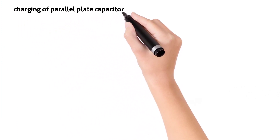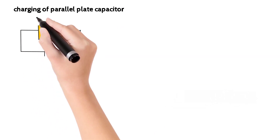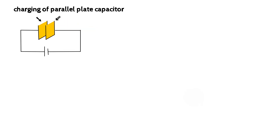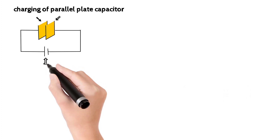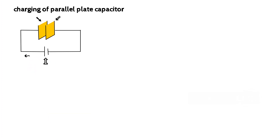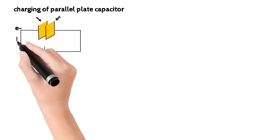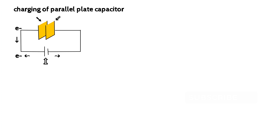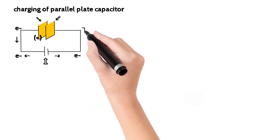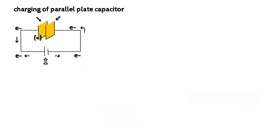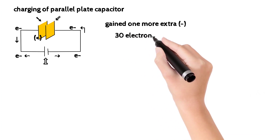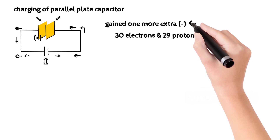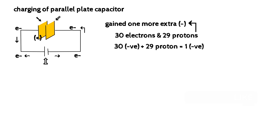Now, a parallel plate capacitor will be charged and discharged. Consider two copper conductors acting as plates. Due to room temperature, free electrons already exist in the copper conductor. When the capacitor is connected to a supply, the positive terminal attracts free electrons from the left plate, and the negative terminal pushes free electrons into the right plate. When a free electron leaves the left plate, that plate has 29 protons but fewer electrons — giving it a positive charge.